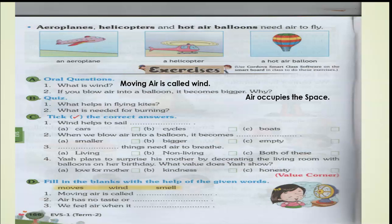This is a quiz — write in one word. What helps in flying kites? Kite ko udaane ke liye kya madad karta hai? Moving air — or you can say wind. Both answers are correct. What is needed for burning? Jalane ke liye kis ki zarurat hoti hai? Air.